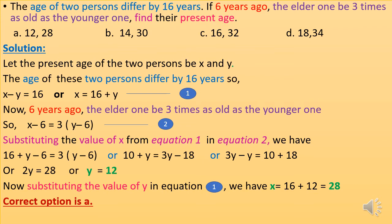Substituting the value of x from equation one into equation two: 16 plus y minus 6 equals 3 times (y minus 6), or 10 plus y equals 3y minus 18. So 3y minus y equals 10 plus 18, giving 2y equals 28, or y equals 12. Substituting back: x equals 16 plus 12 equals 28. The correct option is A.